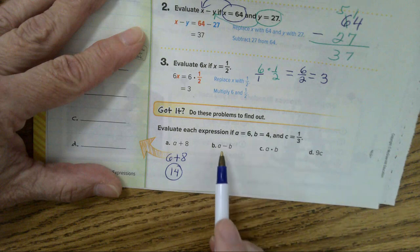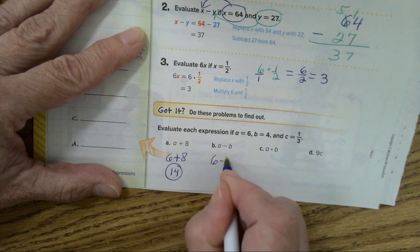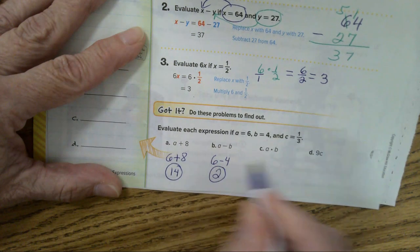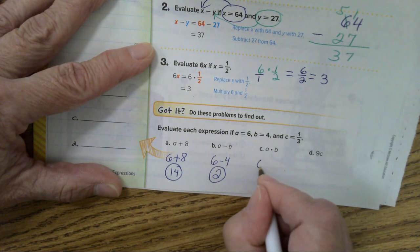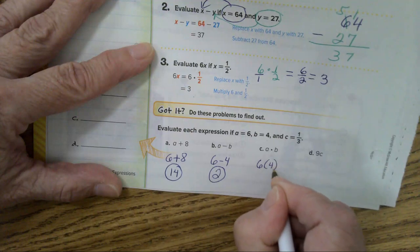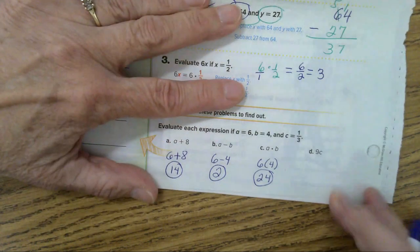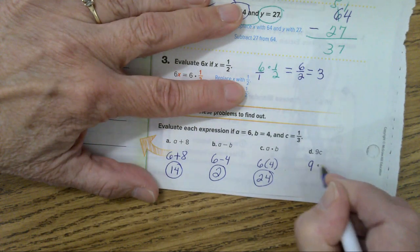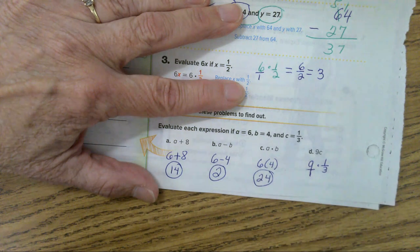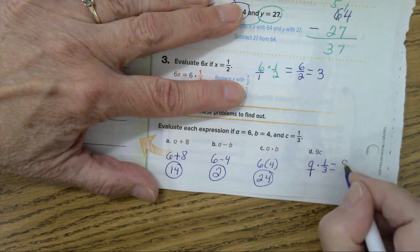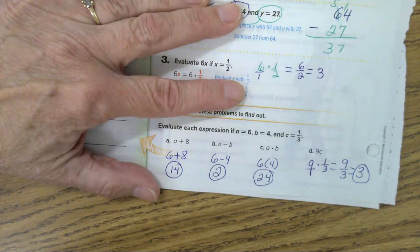In letter B, 6 minus 4. That equals 2. A times B, 6 times 4. I'm going to write it like this. And that equals 24. 9 times C, 9 times 1 third. I'm just going to gently pick the 9 up and put a 1 under it. You would end up with 9 over 3. And that equals 3. You can also simplify before you multiply.